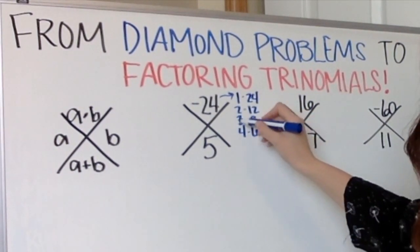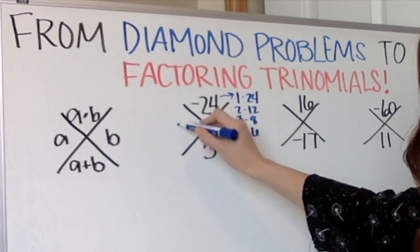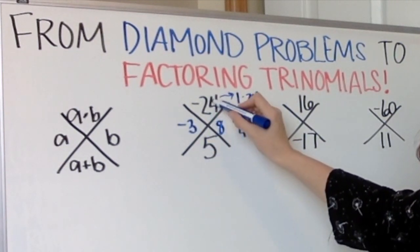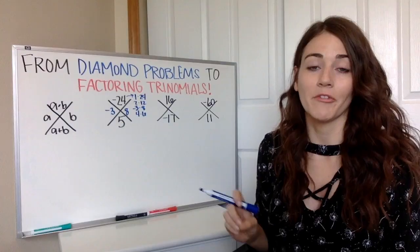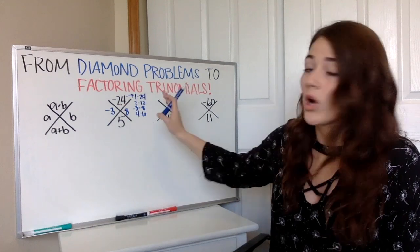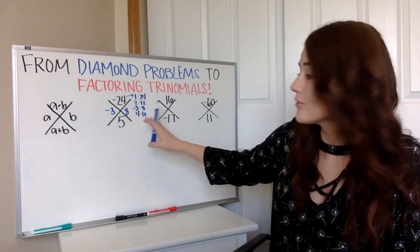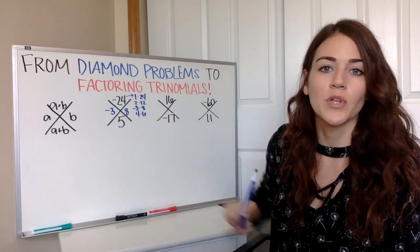So looking at these, how could I make one positive and one negative so that it equals a positive five? I could use a positive eight and a negative three. Eight times negative three would get me negative 24. Eight plus a negative three would get me five. So you know if that negative is up on top, one has to be positive, one has to be negative. So you just have to figure out how could I subtract these to get that bottom number.